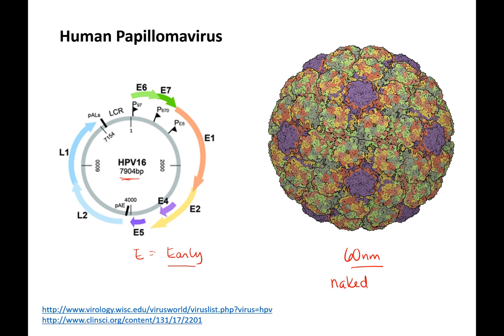There are E or early genes involved in regulation of DNA replication and transcription, and L or late genes which are the capsid or structural genes. The capsid is made of 72 pentamers — each pentamer consists of five L1 proteins, and inside each pentamer is L2. That's the capsid structure.